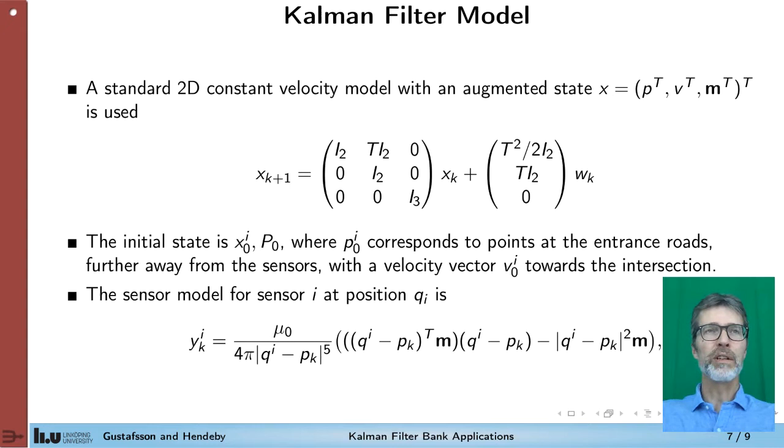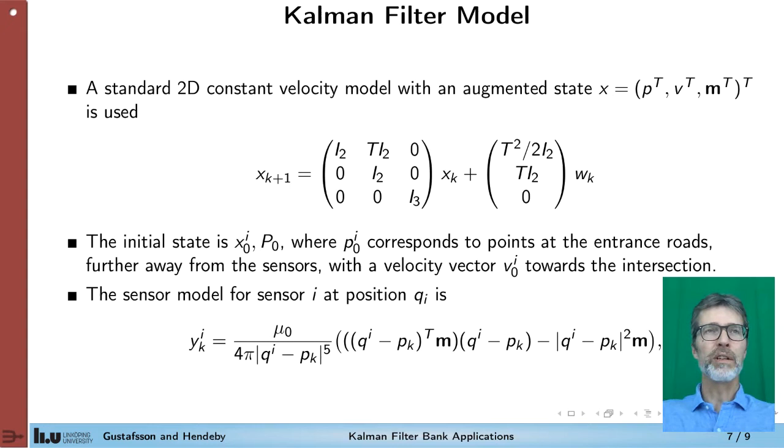So the state-based model we use is the standard two-dimensional constant velocity model where the state vector is augmented with the magnetic dipole. So we have in total two plus two plus three, that is seven states.